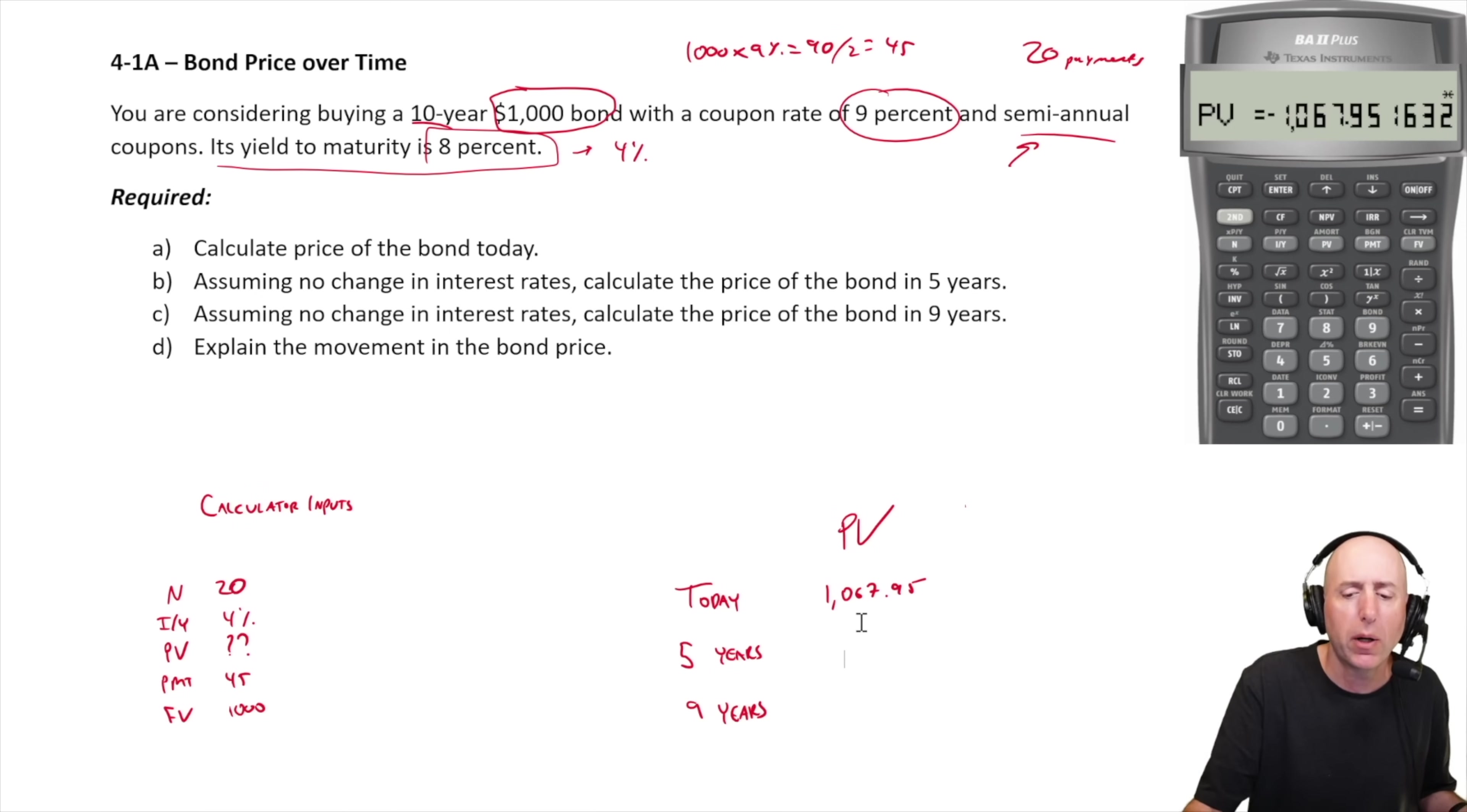And had the coupon rate been lower, there would be a discount. I think the B version of this problem shows a discount. Assuming no changes in interest rate, calculate the price of the bond in five years. So this is asking us, everything else in the bond is equal, but just change the N. What is our new N? Well, five years from now there's five years left, which means there's 10 payments left. There's two payments a year, there's five years left. So our N is 10.